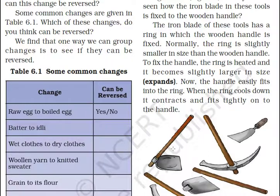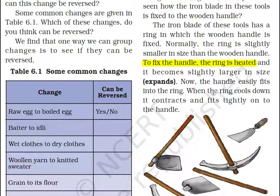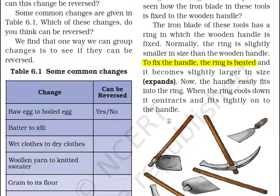To fix the handle tightly, the ring is heated and it becomes slightly larger in size — because when we heat things, they expand. Now the handle easily fits into the ring. When the ring cools down, it contracts and grips tightly onto the handle.